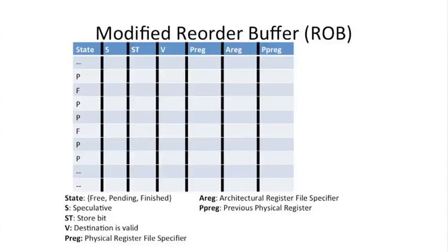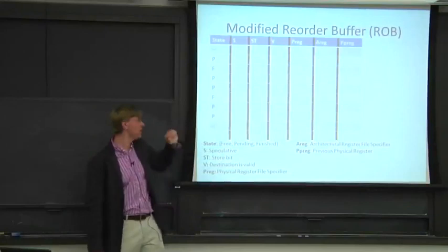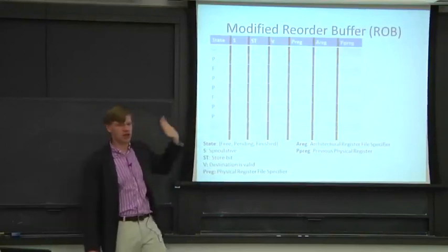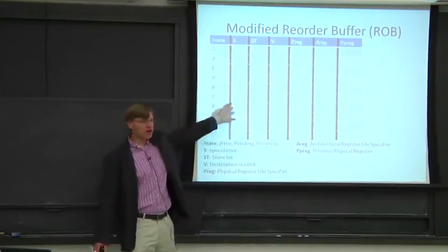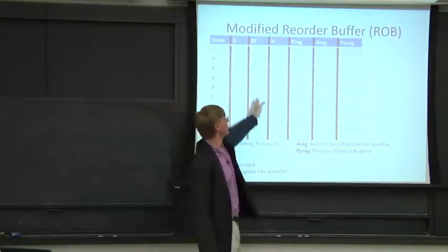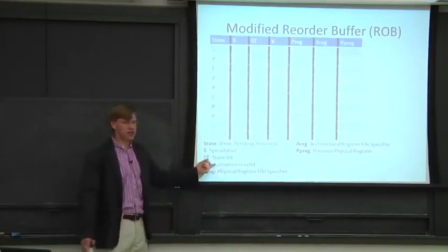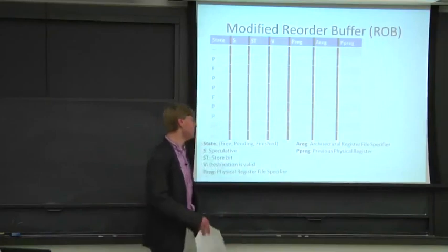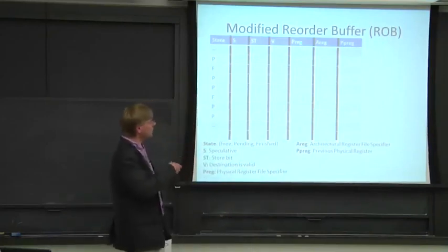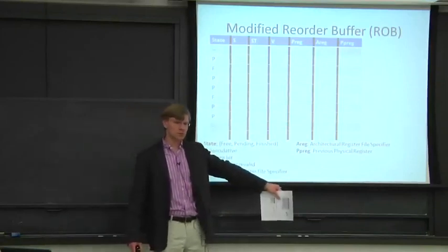Let's look at what we add to the reorder buffer. Our previous reorder buffer had state fields — pending, free, or finished — where dash-dash represents free and F means finished, meaning the instruction reached the end of the pipe and is waiting to commit. It had a bit for whether it follows a branch, a bit for whether it's a store, and a bit for whether it writes a register — indicating whether the destination is valid. That's important for knowing whether to commit state to the architectural register file. We also had a physical register file specifier telling us where to read from.